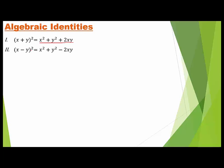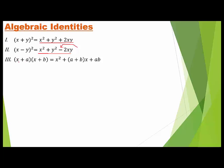The second identity is: (x minus y)² equals x² plus y² minus 2xy. If there is a minus sign, then the minus is placed before 2xy.